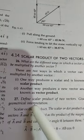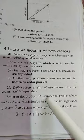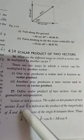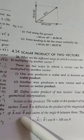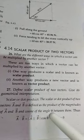The scalar product, or dot product, of two vectors A and B is defined as the product of the magnitudes of vector A and vector B and the cosine of the angle theta between them.